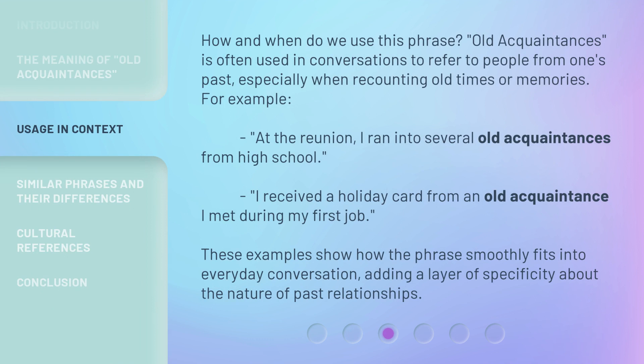How and when do we use this phrase? Old Acquaintances is often used in conversations to refer to people from one's past, especially when recounting old times or memories. For example: "At the reunion, I ran into several old acquaintances from high school." "I received a holiday card from an old acquaintance I met during my first job."